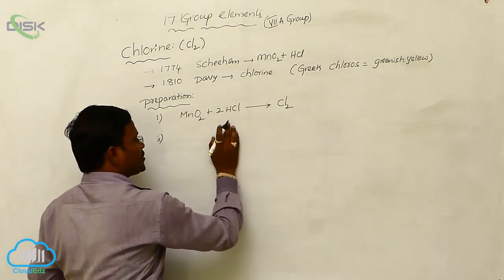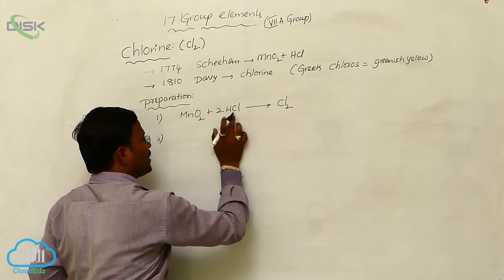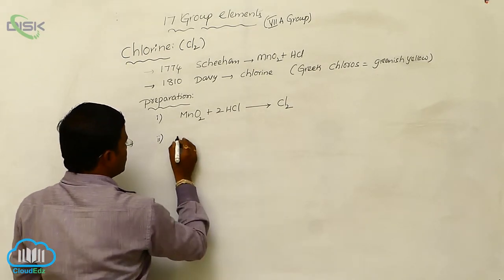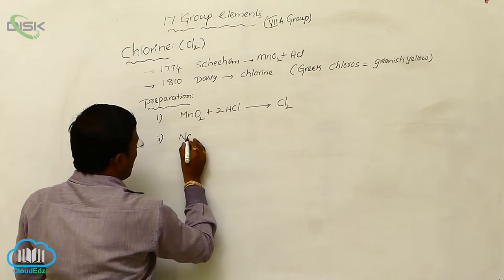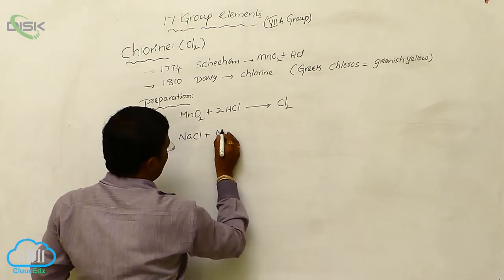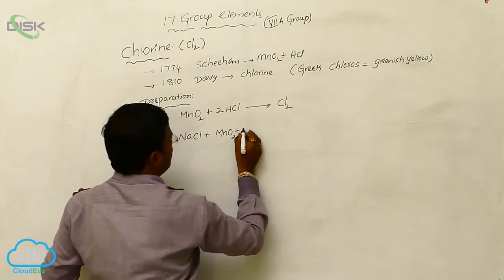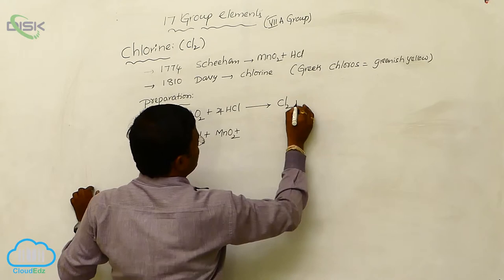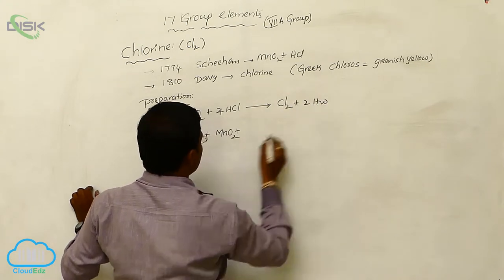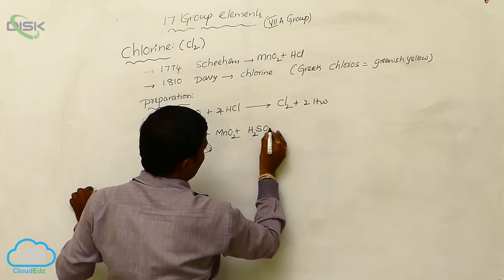Second method, in the same preparation, instead of hydrochloric acid, concentrated hydrochloric acid, we can use common salt, sodium chloride, plus MnO2, plus 2H2SO4. MnO2, concentrated sulfuric acid.